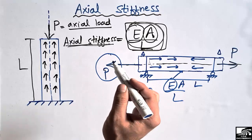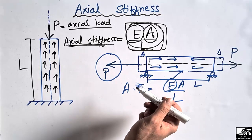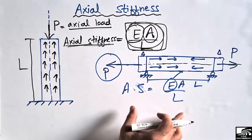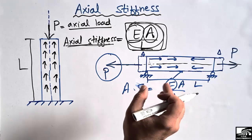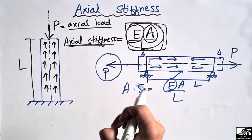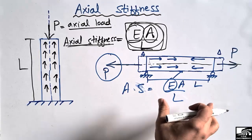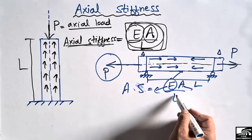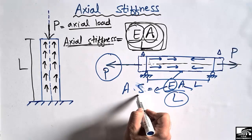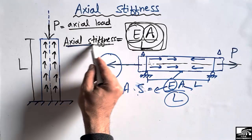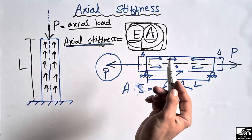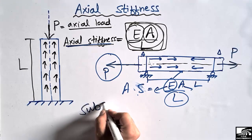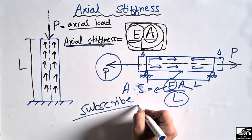This horizontal axial load on the beam may be an earthquake load or wind load. The three key factors that axial stiffness depends on are elasticity, area, and length. By changing these factors we can increase or decrease the axial stiffness of a beam or any structural member. Don't forget to subscribe to our channel for daily engineering videos — thank you for watching.